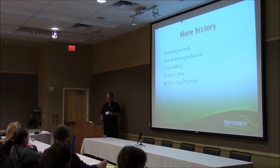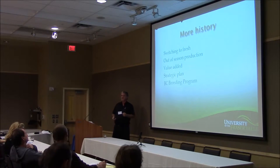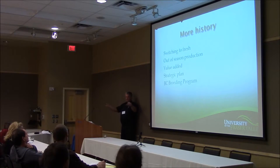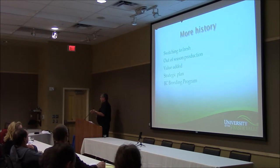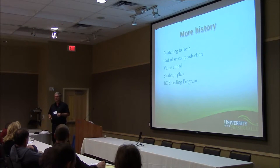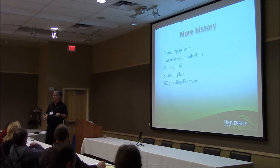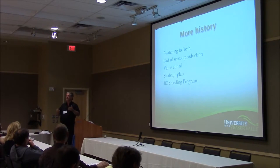Strategic plan — we, as an industry, went and produced a strategic plan for where we want to go. We wanted to know where we should be going with this whole thing. In strawberries, we're not going to be able to grow for processing anymore. So what do we want to grow? Do we just roll over and die? Do we want to go to a different system and grow fresh fruit? How do we grow fresh fruit?